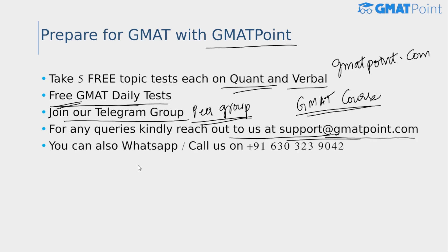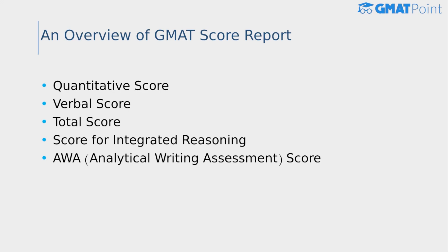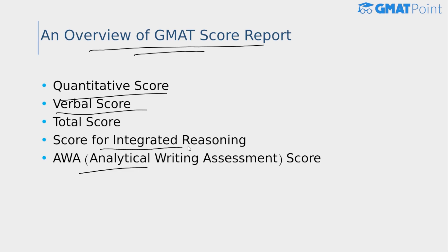You can also WhatsApp or call us on 630-323-9042. Now let us have an overview of the GMAT score report. The GMAT assesses the most important skills for graduate business education — it tests your verbal reasoning skills, quantitative reasoning skills, analytical writing, and integrated reasoning skills. Your GMAT score report includes five sections.